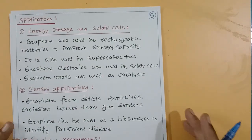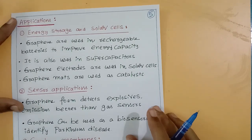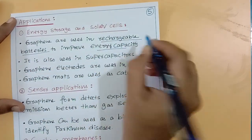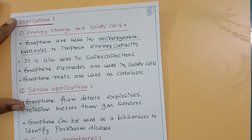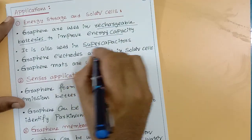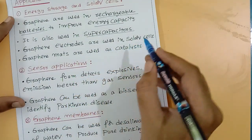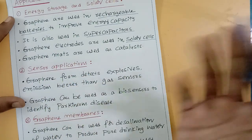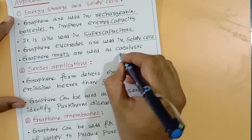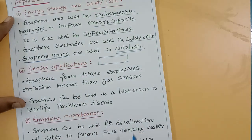Applications — energy storage and solar cells: graphene is used in rechargeable batteries such as lithium-ion batteries to improve energy capacity. It also helps prevent overheating and short circuits in lithium-ion cells. Graphene is used in supercapacitors to store high energy. Graphene is also used as electrodes in solar cells due to its excellent electrical conductivity. Graphene mats are additionally used as catalysts.